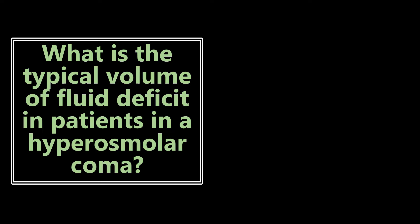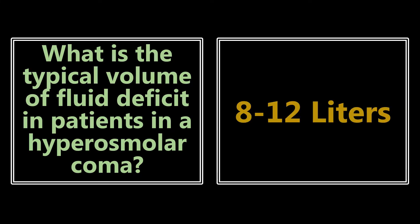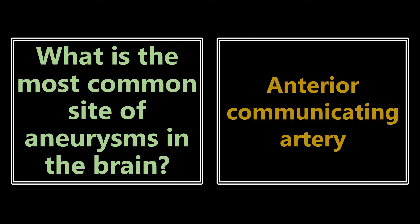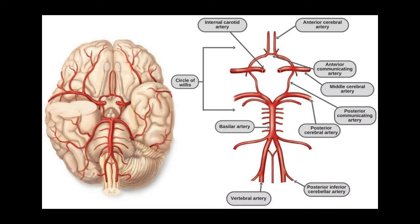What is the typical volume of fluid deficit in patients with hyperosmolar coma? The volume deficit is huge — up to 8 to 12 liters. What is the most common site of aneurysms in the brain? It's the anterior communicating artery, located between the anterior cerebral arteries in the circle of Willis.